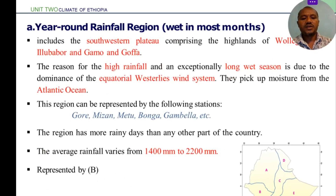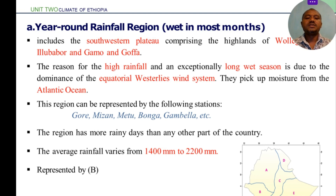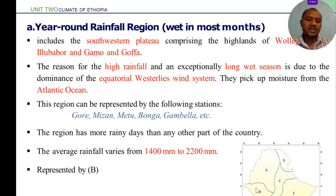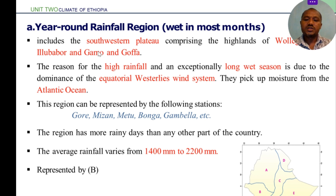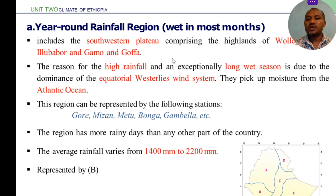The year-round rainfall region has rainfall in most months, almost throughout the year. This region is almost the same geographic extent as parts of Ethiopia, including the south-western plateau and its landforms.